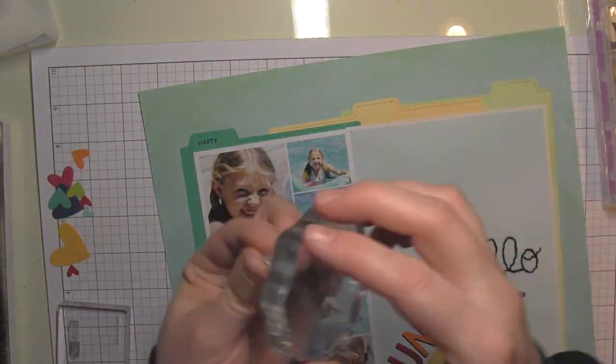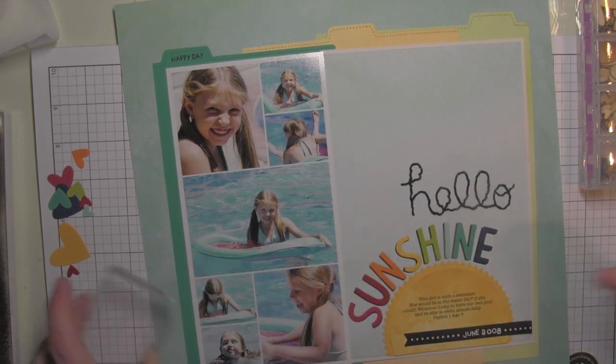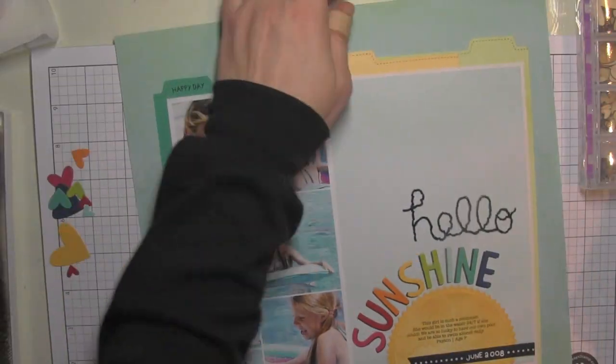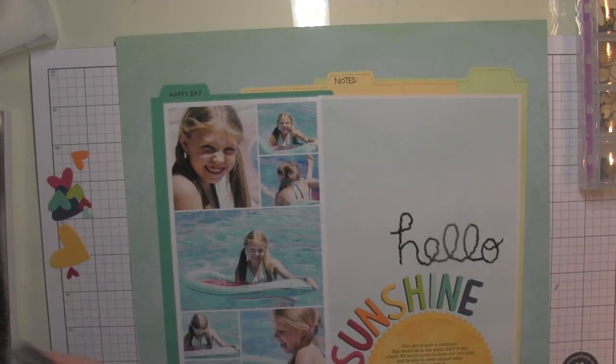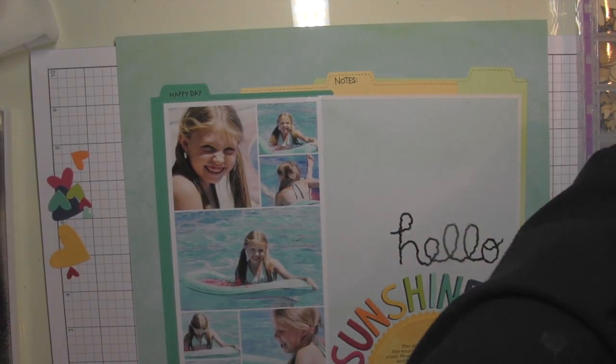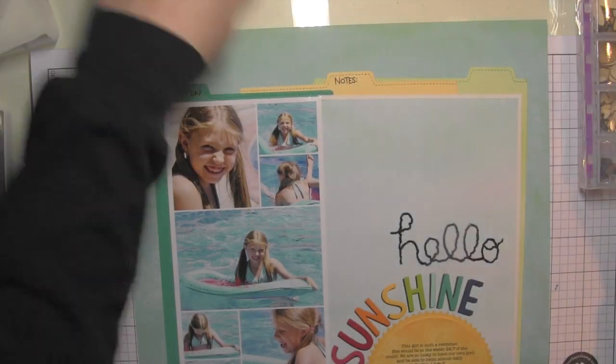Then I will add some stamped words to those tabs along the top. This is where those Plan On It stamp sets come in so handy. All those little teeny tiny words are fantastic. Those are some of my most used types of stamps for scrapbook page layouts.